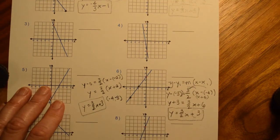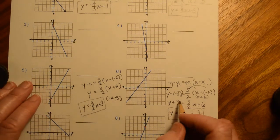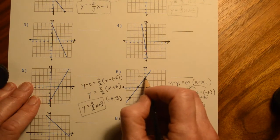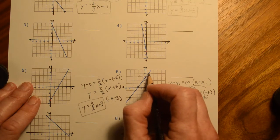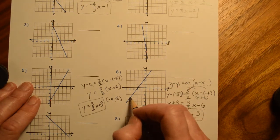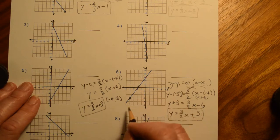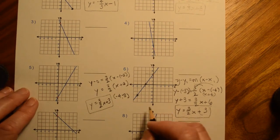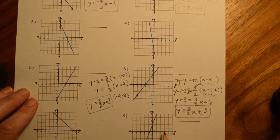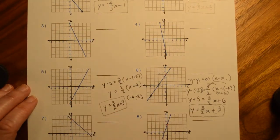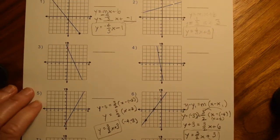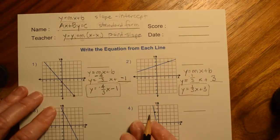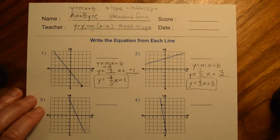So you would only use this point slope method if your y-intercept did not have an integer coordinate, but you could find two other points somewhere that did. On these sheets they're definitely not going to do that to you, but this is just when you would use that. So for problems three, four, five, seven, and eight, I want you to write the equation but just do it in the slope intercept form. You don't have to try this other form. Good luck.